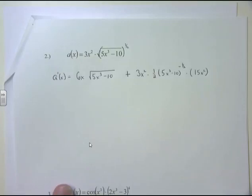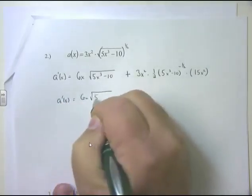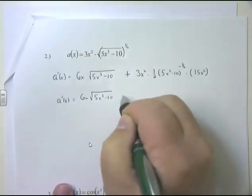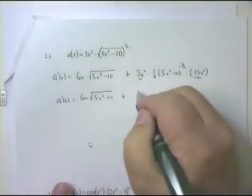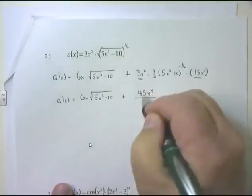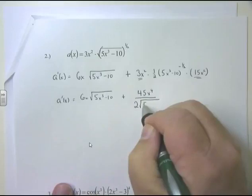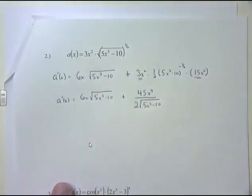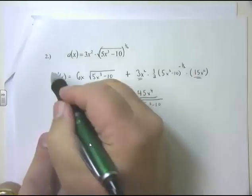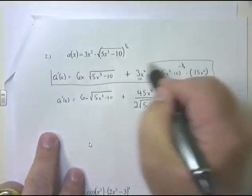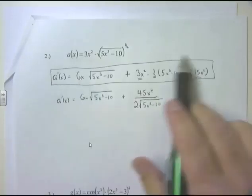There are lots of ways to clean this up. For the back-of-book look: 6x times the square root of 5x³ - 10, plus 45x⁴ over 2 times the square root of 5x³ - 10 (since the negative exponent puts it on the bottom and a half power is a square root). However, what we really want to see is the product rule in action and the chain rule at the end. If you type the unsimplified version in WebWork, it will still give you full credit.